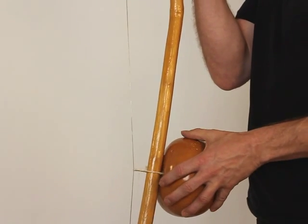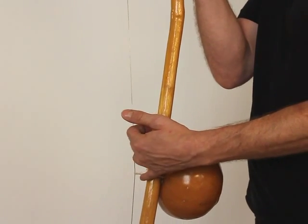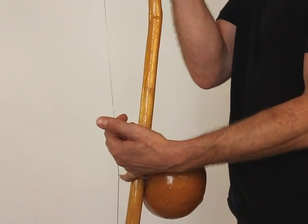Where the cabasa, this one here, is attached to the arame, the string—the small finger goes under here, the little finger.